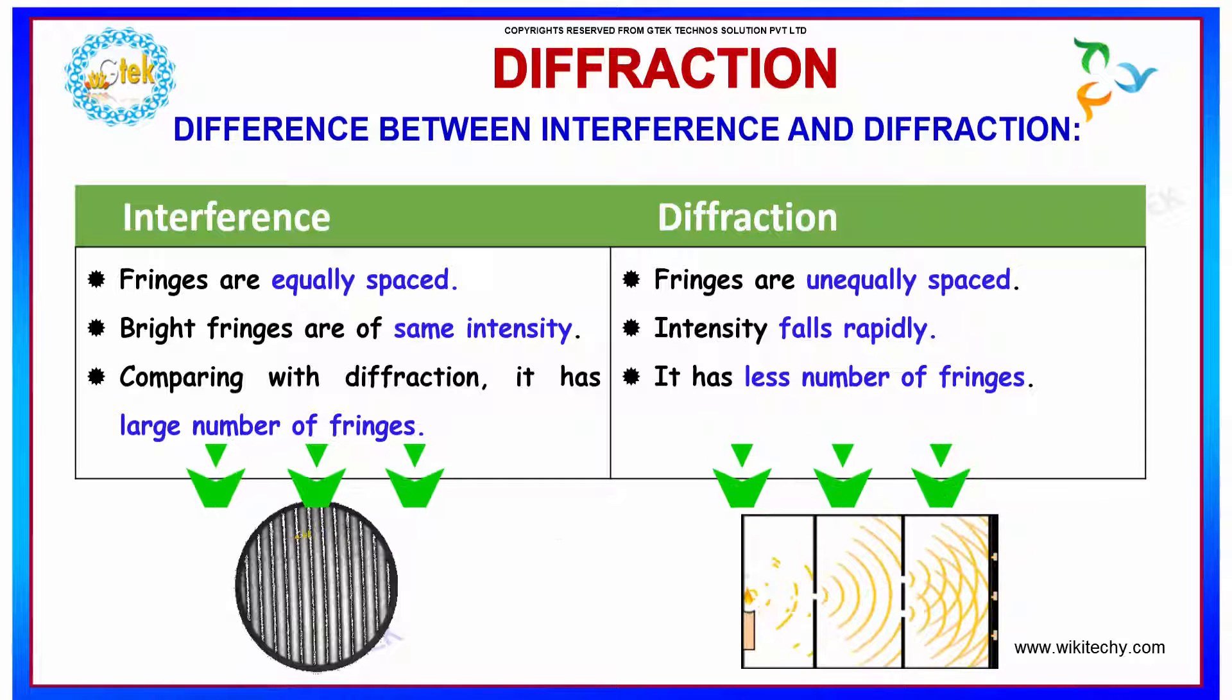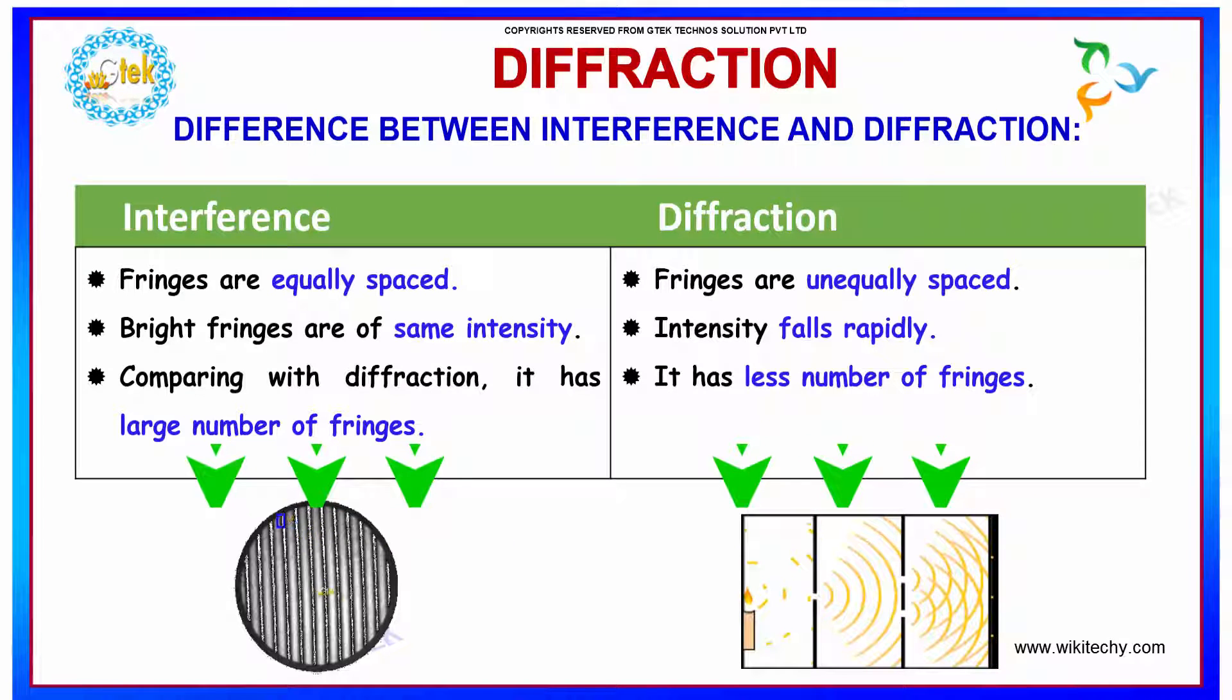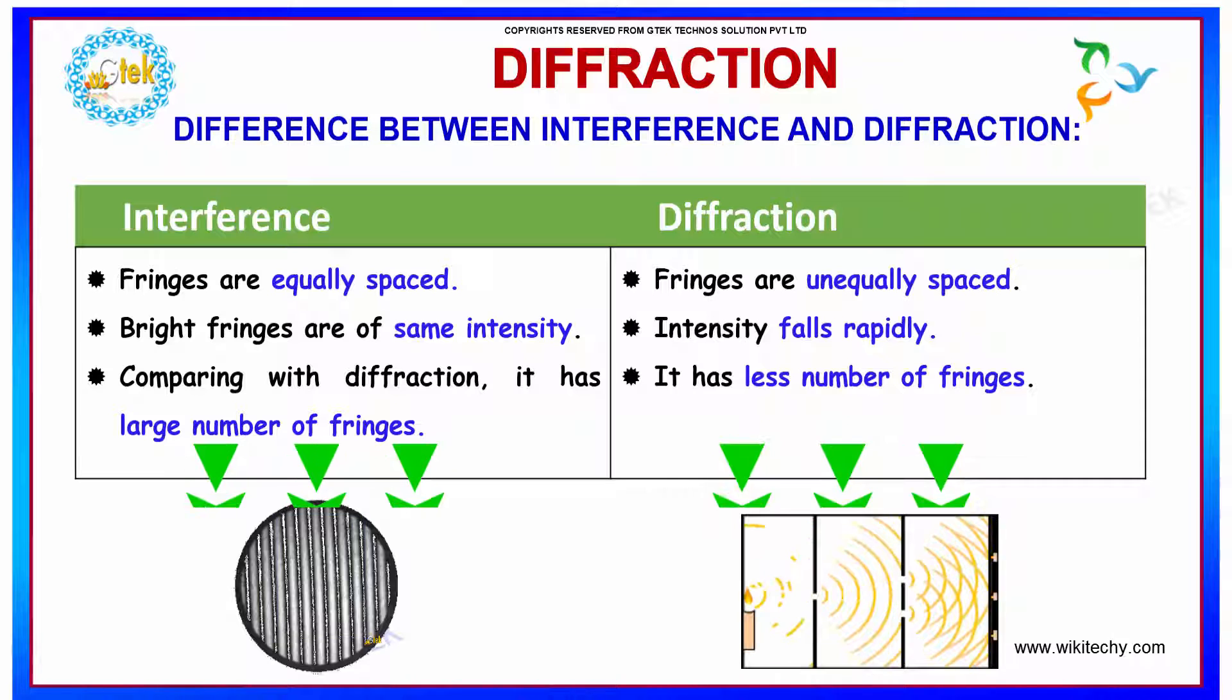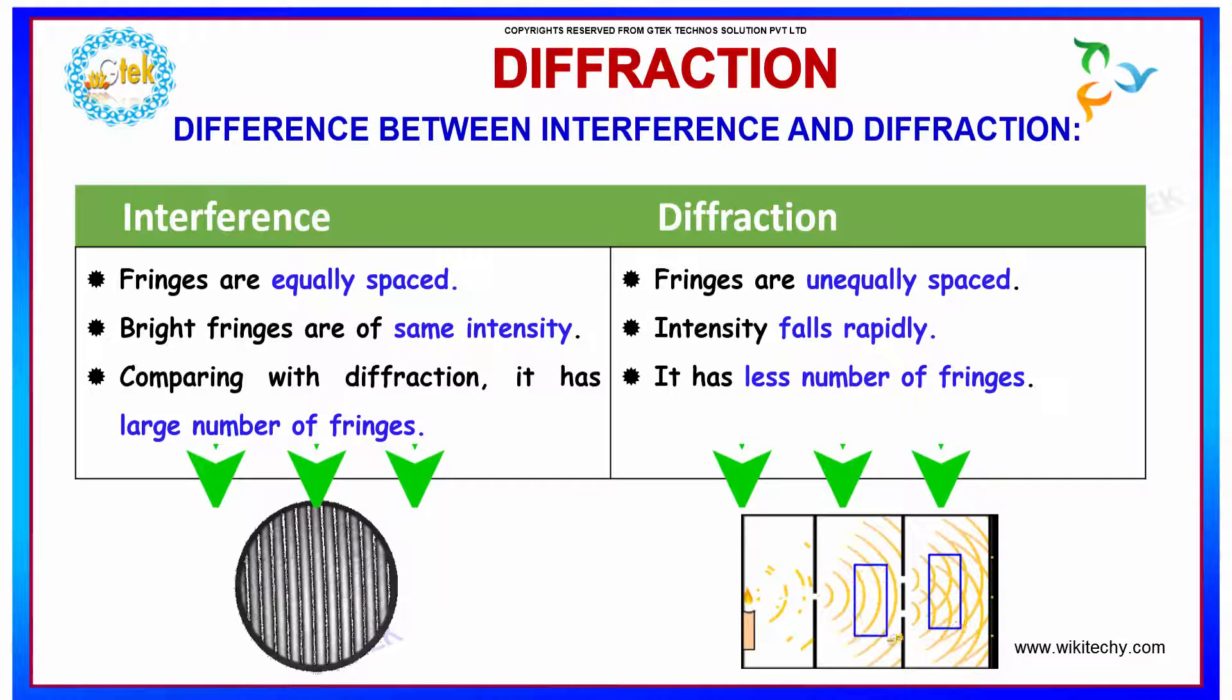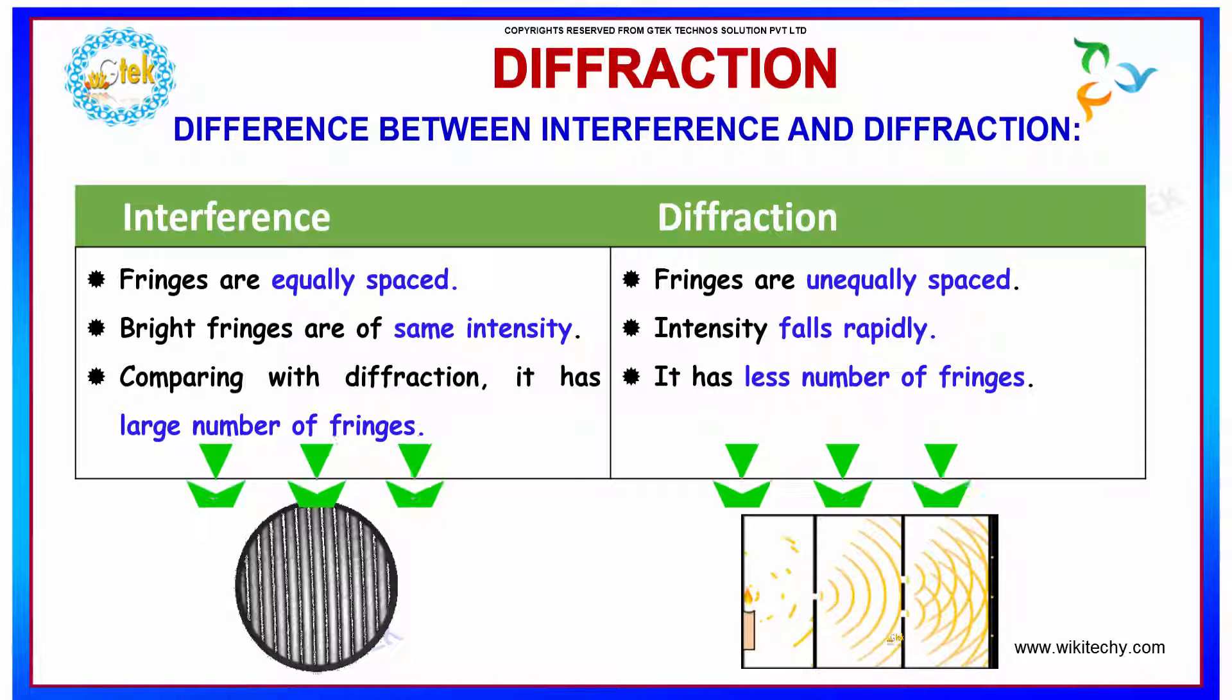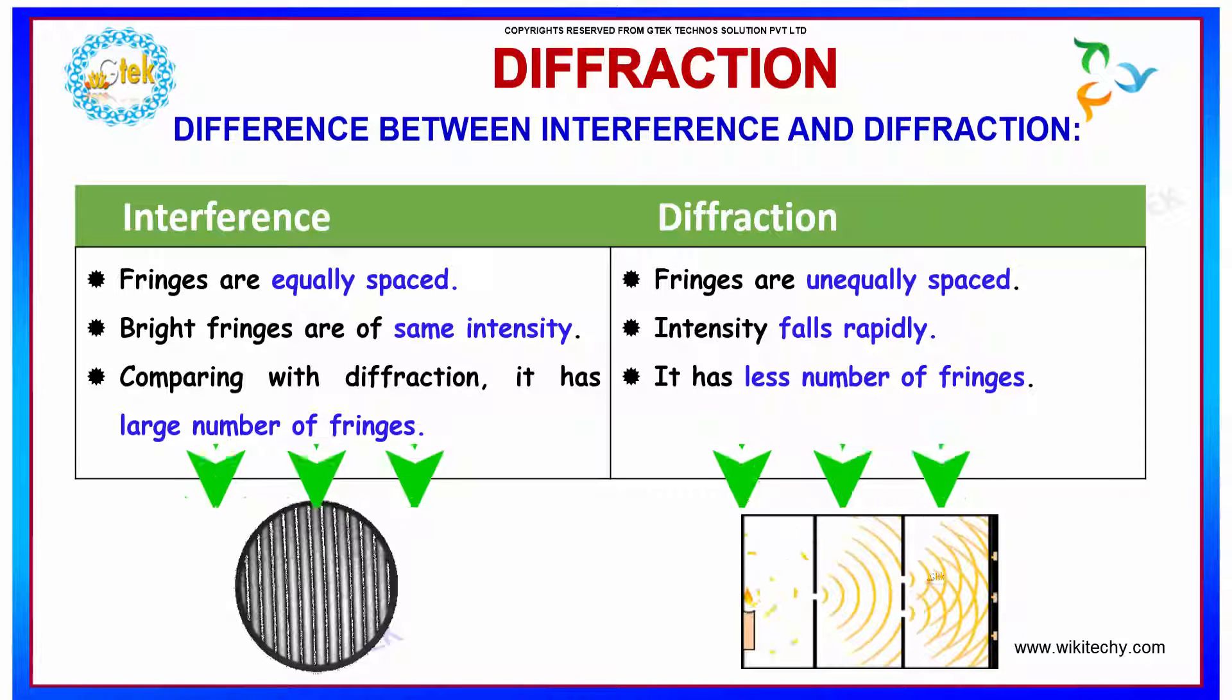Here the fringes. The fringes are equally spaced, bright fringes are of same intensity. Comparing with diffraction it has large number of fringes. Here fringes are unequally spaced, intensity falls rapidly, it has less number of fringes. That is the difference between interference and diffraction.